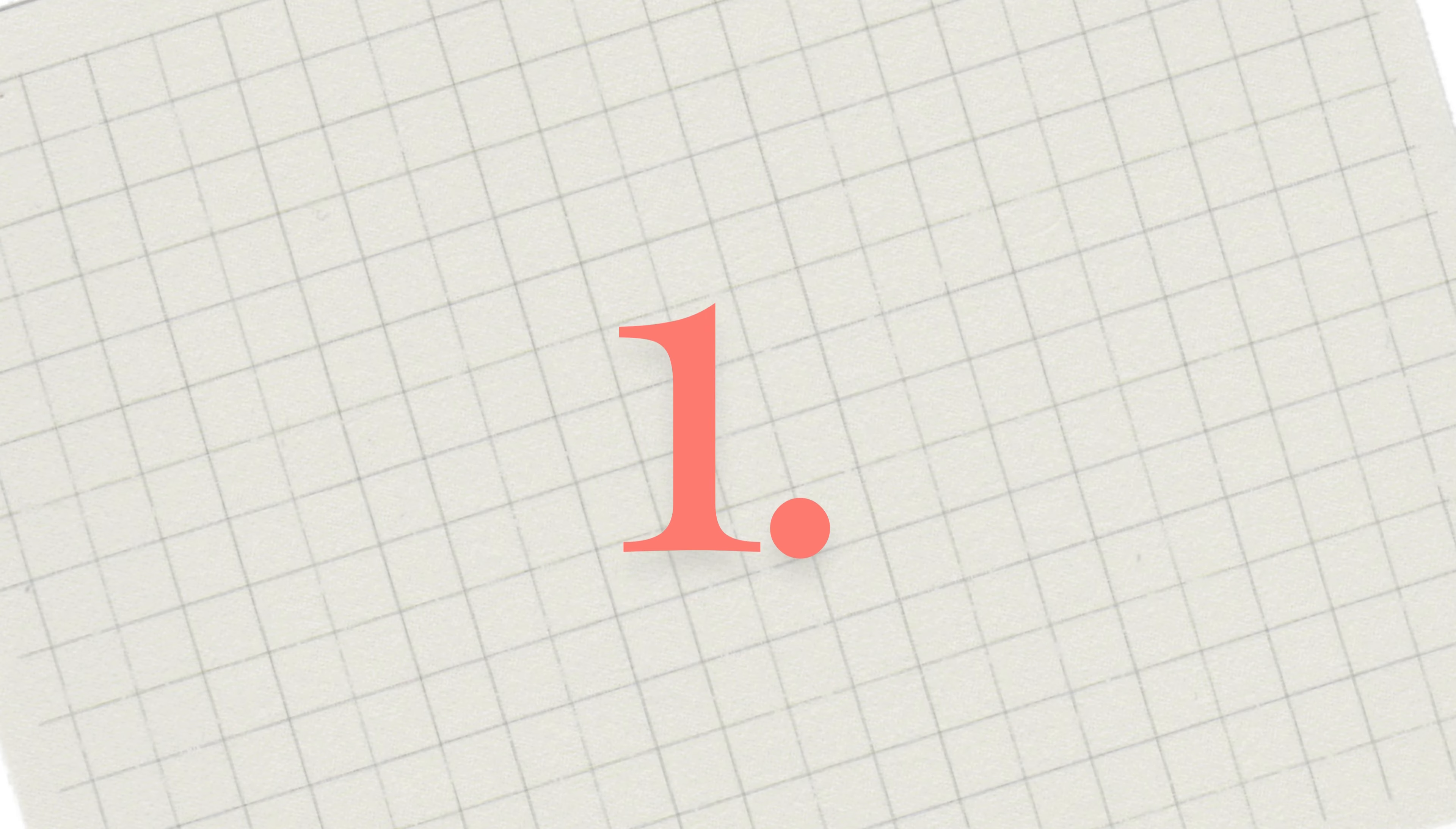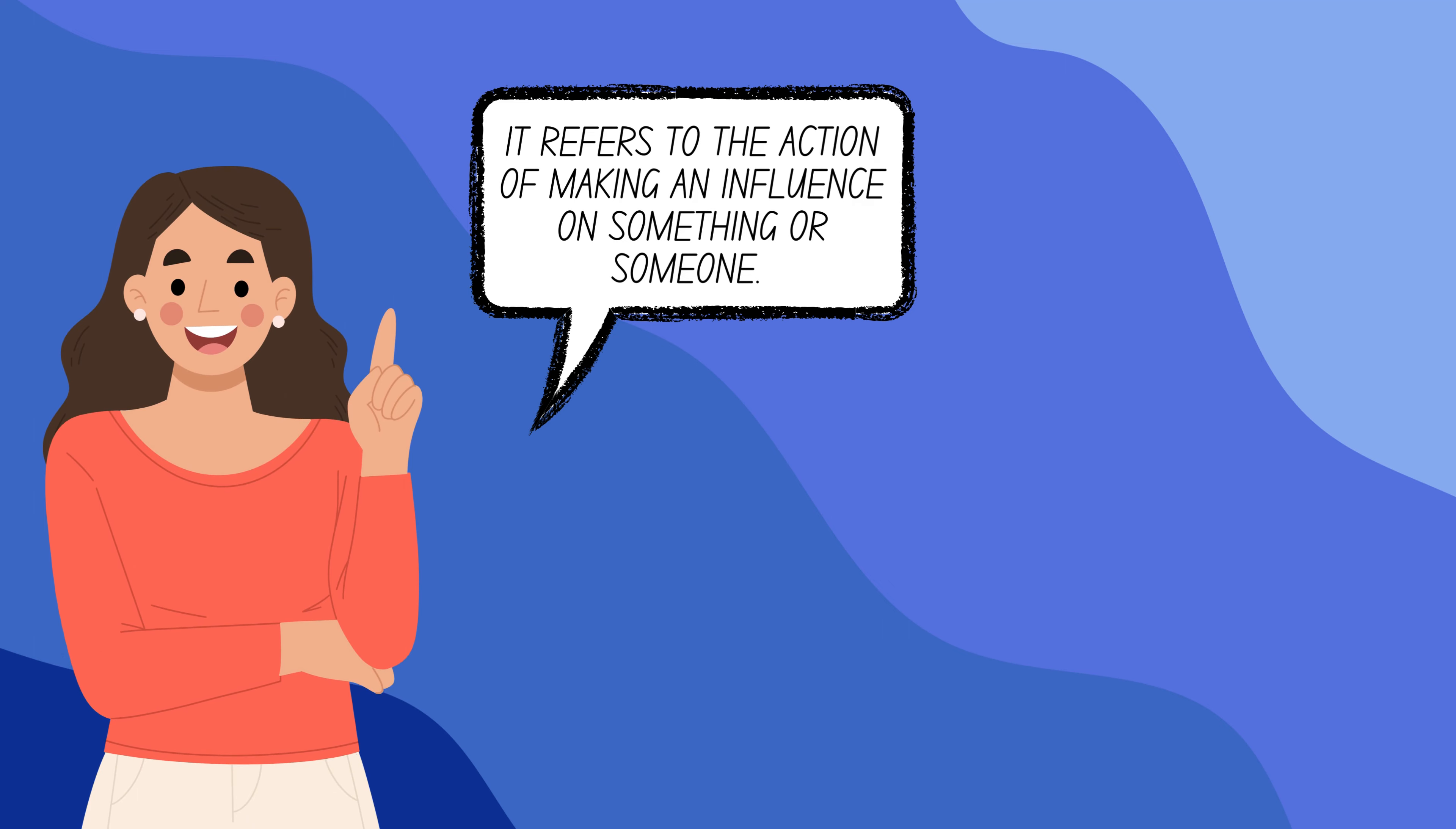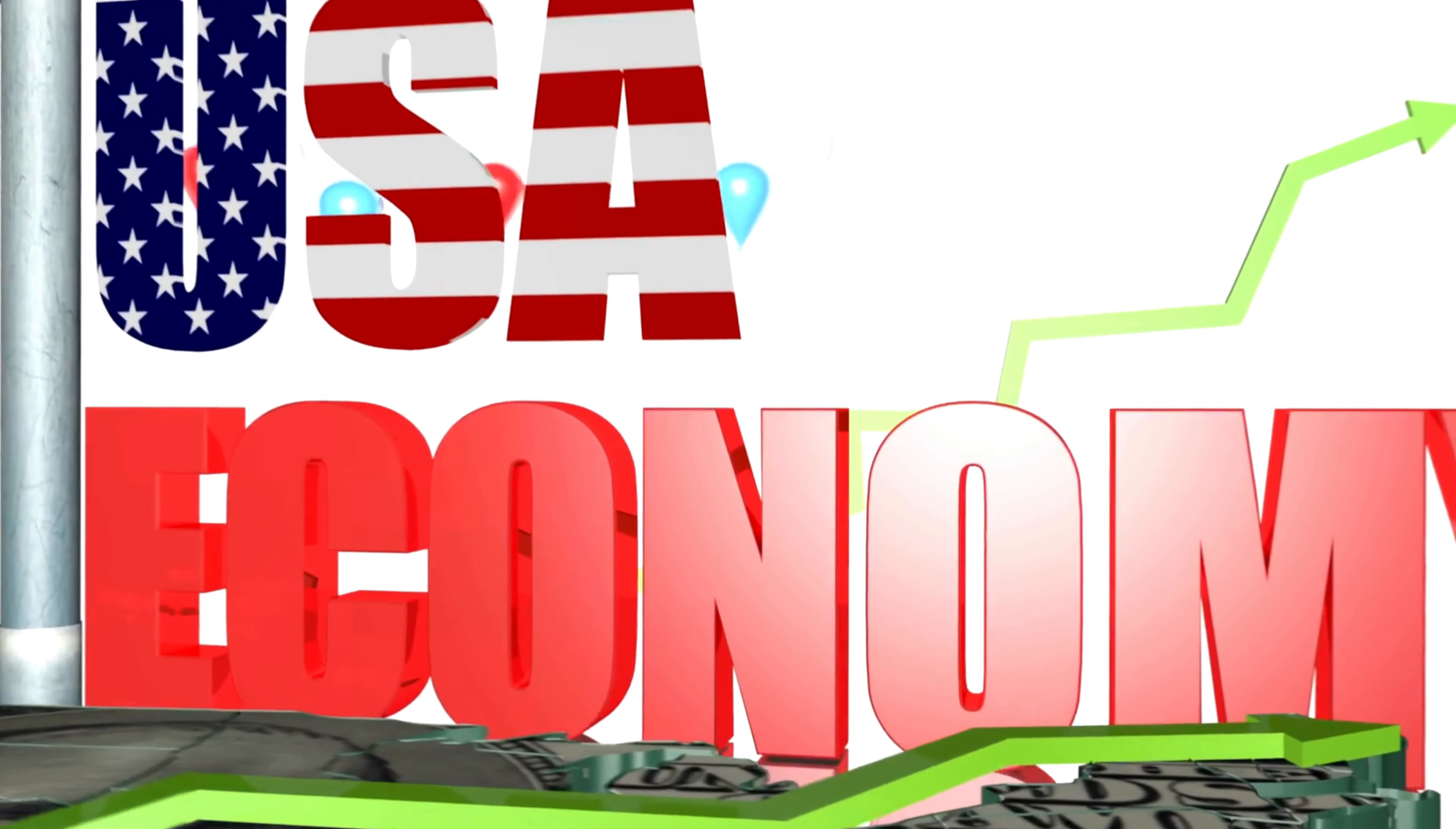First, let us talk about affect and its usage. The word affect is generally used as a verb which means to influence or make a change in something. It refers to the action of making an influence on something or someone. For example, when we say the new regulations will affect the economy, we mean that the regulations will have an impact on or alter the economy.